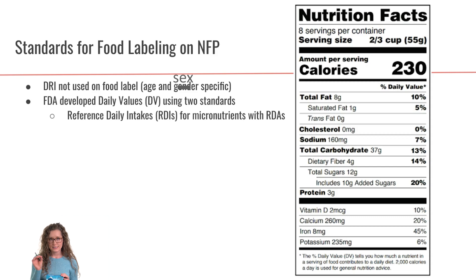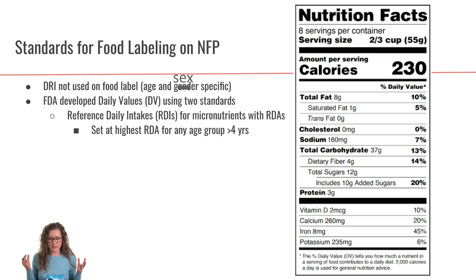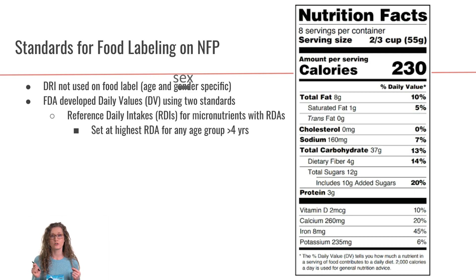The first standard used to develop daily values are the reference daily intakes or RDIs — same letters as DRIs, just in a different order. We use RDIs for micronutrients that have RDAs. Since the RDA is going to be different depending on life stage or gender, what they do is pick the highest RDA for any age group over four years. That way there's only one value that needs to be listed for each of those different micronutrients.